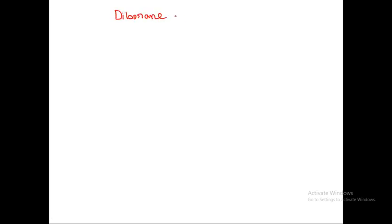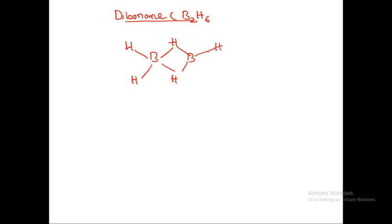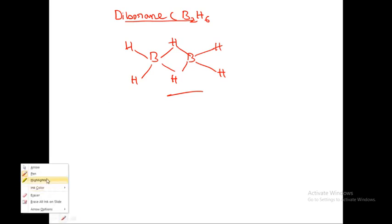Diborane is B2H6. So this is B, B, H, H, H, H — you have two boron and six hydrogens. So this was the simplest structure that you have studied. In this class we will discuss the more detailed structure.